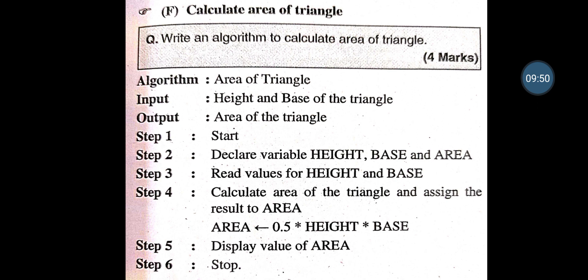Calculate the Area of a Triangle. Input is Height and Base of Triangle; output is Area of Triangle. Step 1: Start. Step 2: Declare variables Height, Base and Area. Step 3: Read the values for Height and Base. Step 4: Calculate Area = 0.5 * Height * Base. Step 5: Display the value of Area. Step 6: Stop.